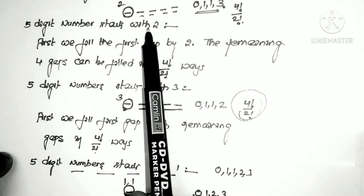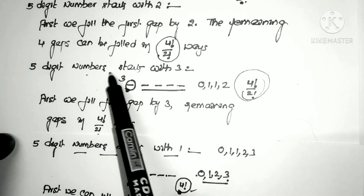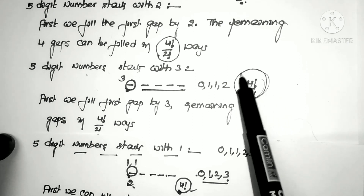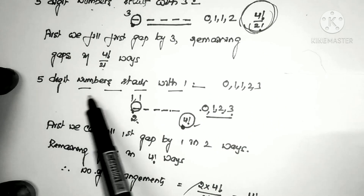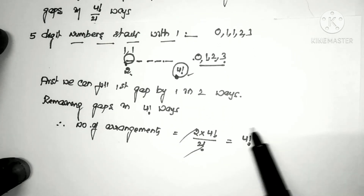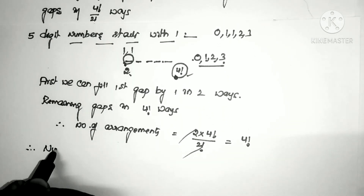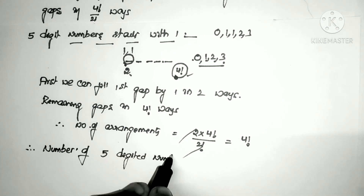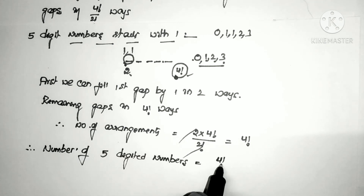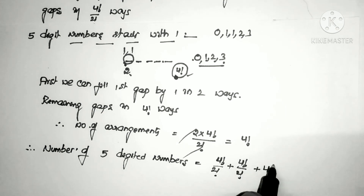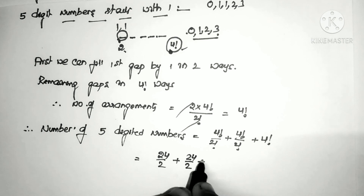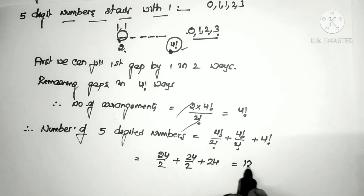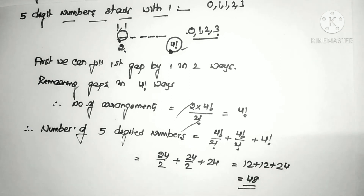Summarizing: 5-digit numbers starting with 2 = 4!/2! = 12; starting with 3 = 4!/2! = 12; starting with 1 = 4! = 24. Therefore the total number of 5-digit numbers = 12 + 12 + 24 = 48. That's the final answer.